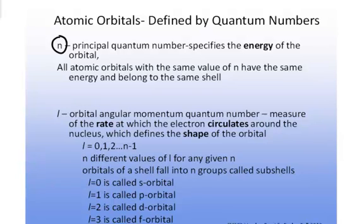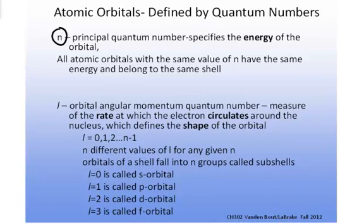L is called the orbital angular momentum quantum number. It's a measure of the rate at which the electron circulates around the nucleus, which defines the shape of the orbital.